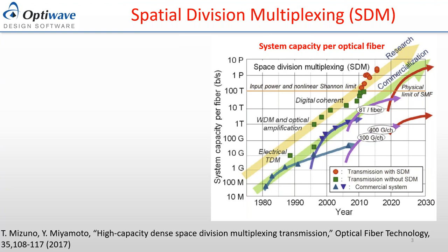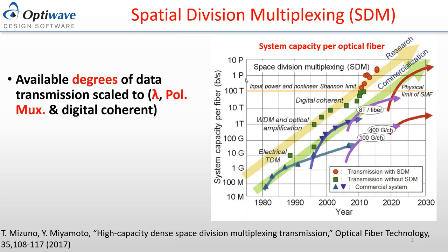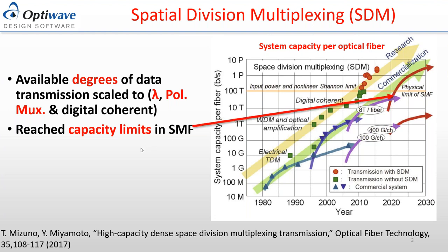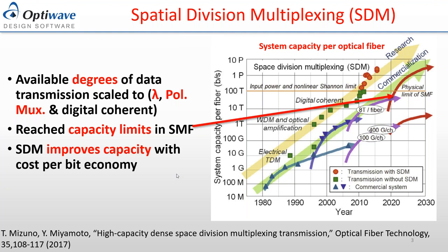Another jump came with 400G/200G, advanced modulation schemes, and digital coherent systems. After that, around 2020, we reached a kind of limit where the solution would be spatial division multiplexing. The transmission progress depended on single multiplexing, wavelength division multiplexing, dense WDM, and polarization multiplexing. Digital coherent systems with 16 QAM, 64 QAM, and 256 QAM enabled higher data rates. We've reached a physical limit where SDM — using different modes on a single core or multi-cores — becomes the solution.